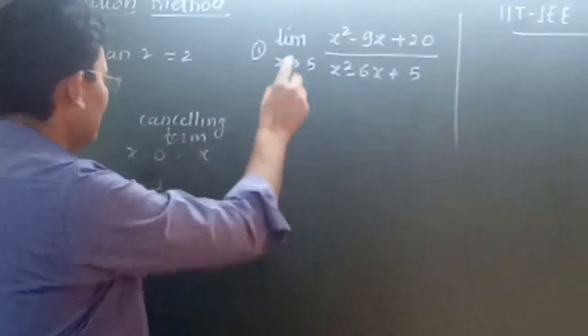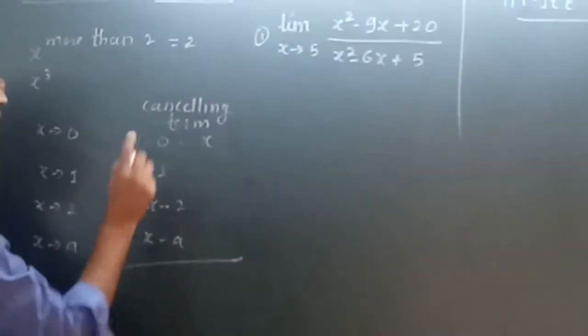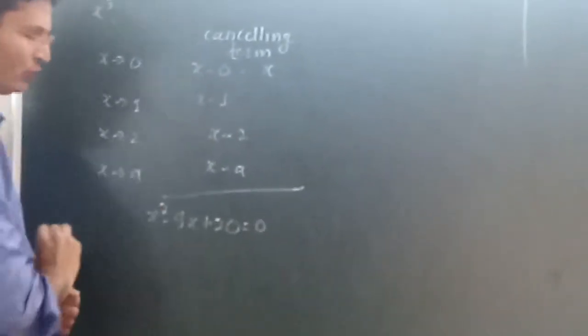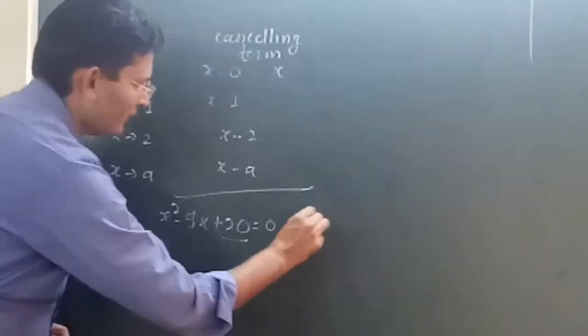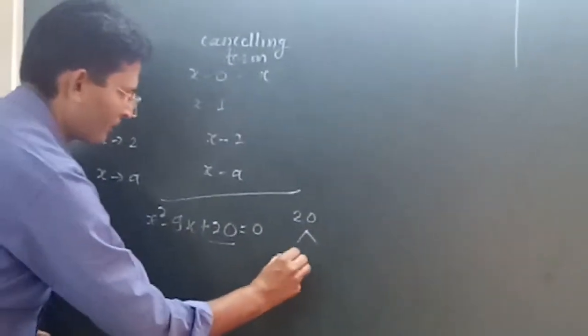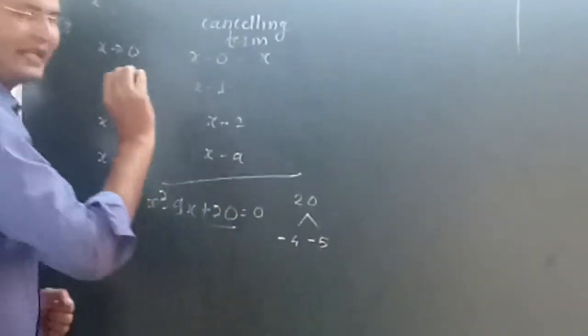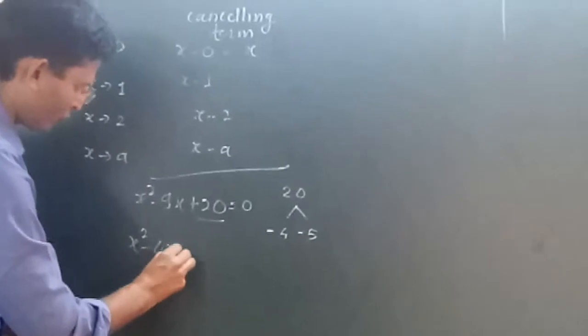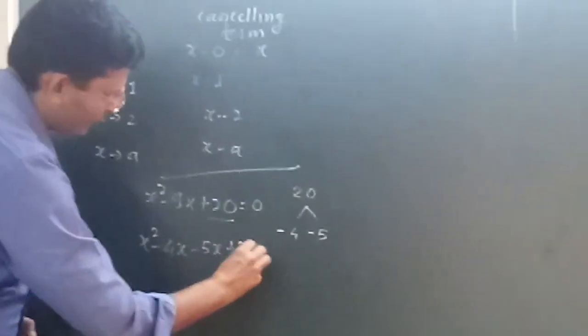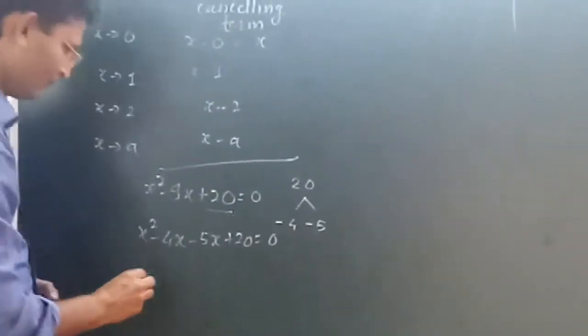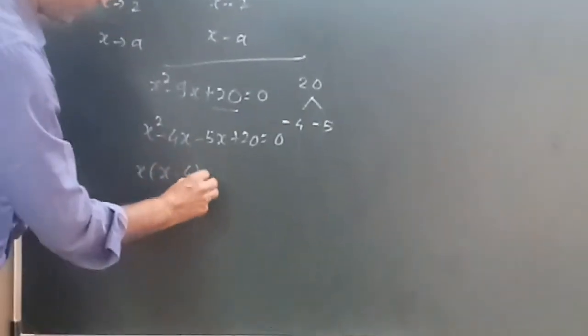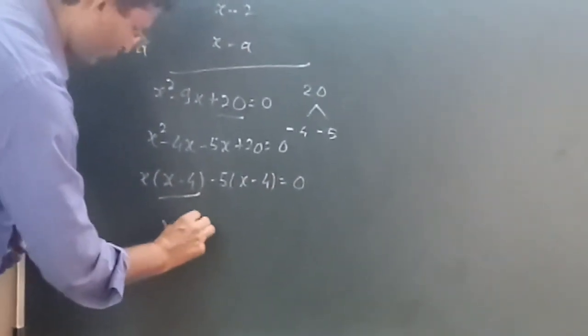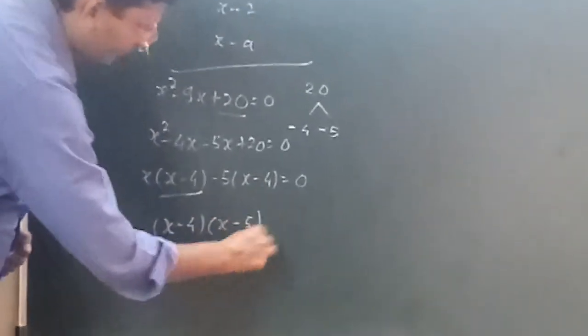How to factorize this term? I will factorize over here. x square minus 9x plus 20 equals 0. It would be plus 20 to be factorized in the term minus 4 minus 5. What are the factors? x square minus 4x minus 5x plus 20 equals 0. If I consider x as common, x minus 4 minus 5, x minus 4 equals 0. So the factors are going to be x minus 4 and x minus 5.